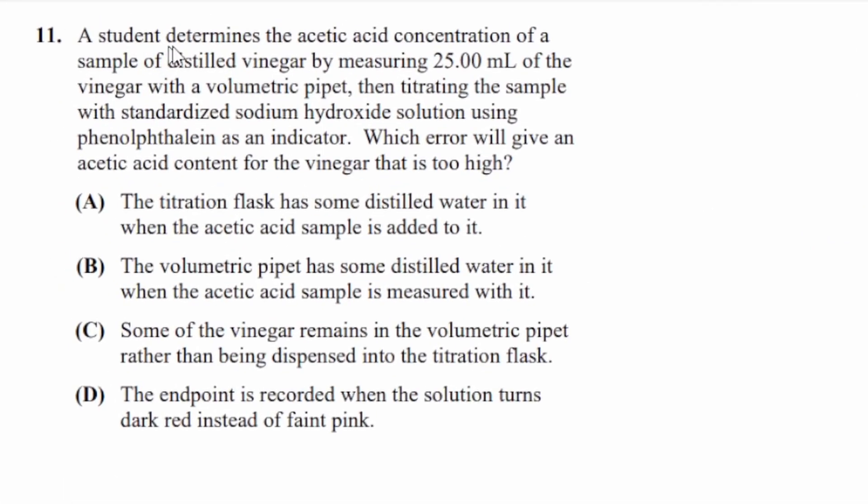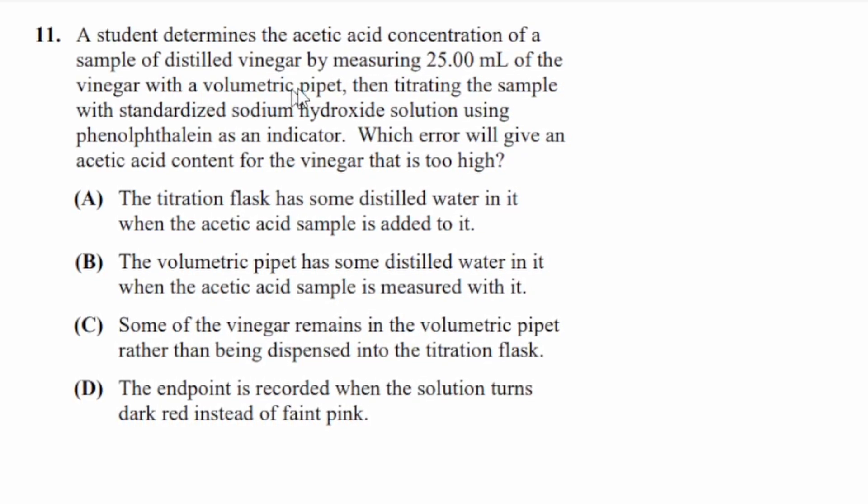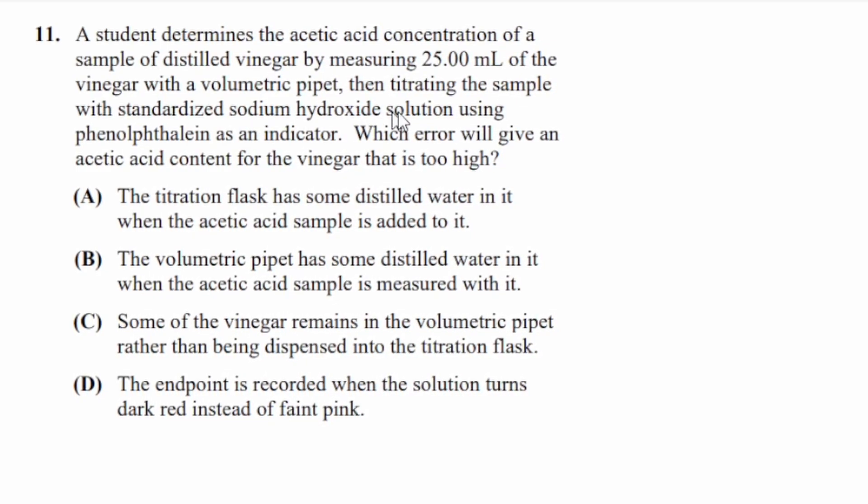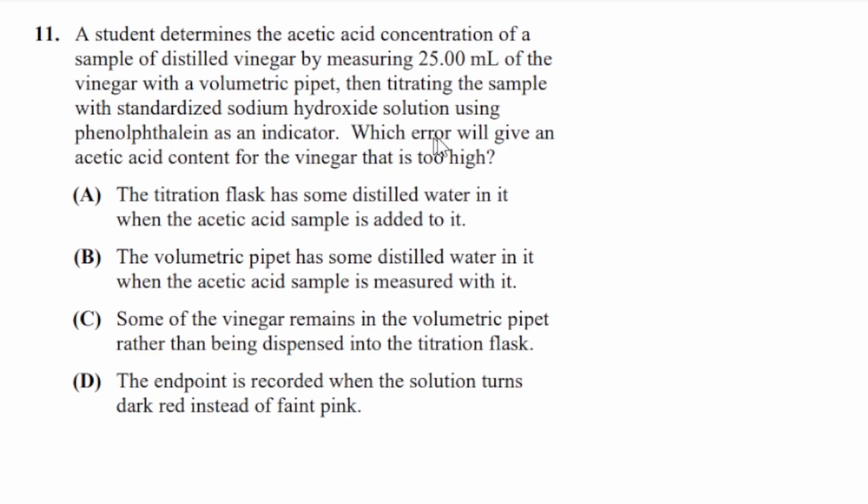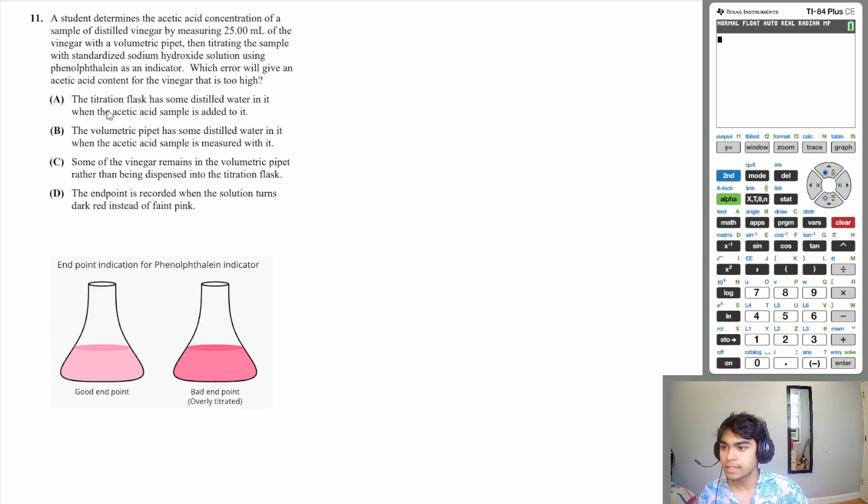Let's move on to question 11. A student determines the acetic acid concentration of a sample of distilled vinegar by measuring 25 ml of the vinegar with a volumetric pipette, then titrating the sample with standardized sodium hydroxide solution using phenolphthalein as an indicator. Which error will give an acetic acid content for the vinegar that is too high? Let's go through our answer choices. A says the titration flask has some distilled water in it when the acetic acid sample is added to it. Now you can have extra distilled water, but that's not going to change how much acetic acid is in the sample. So you're going to use the same amount of sodium hydroxide to titrate it. Therefore, this is going to have no effect on the concentration that you calculate. So it can't be A.